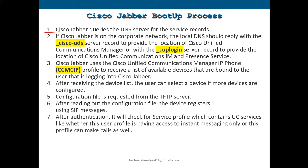Jabber queries the DNS server for SRV records. If Cisco Jabber is on the corporate network — meaning you're in the office or connected via VPN — the local DNS should reply with the underscore cisco-uds server record to provide the location of CUCM, or with the cup-login server record to provide the location of the IM and Presence service.